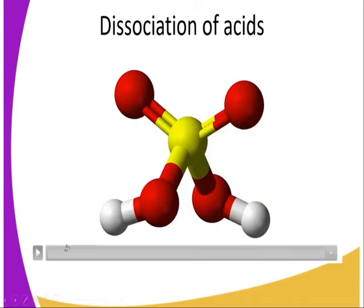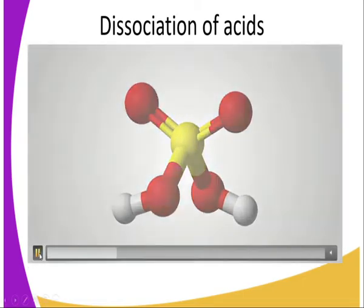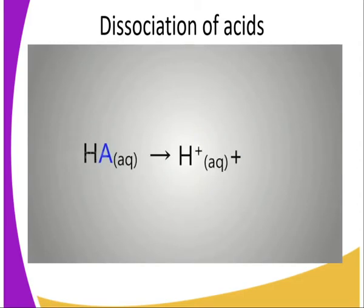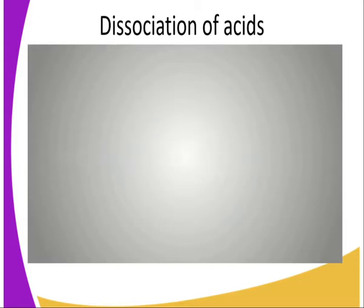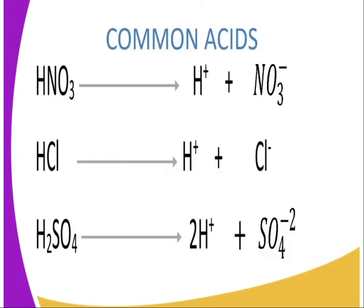What is dissociation? In this diagram, we have a compound where we have an aqueous solution, which dissociates to give us hydrogen ions and A-negative ions, which may stand for any radical — a group of ions which exist together with a net charge. Don't forget, radicals can be positively charged or negatively charged.